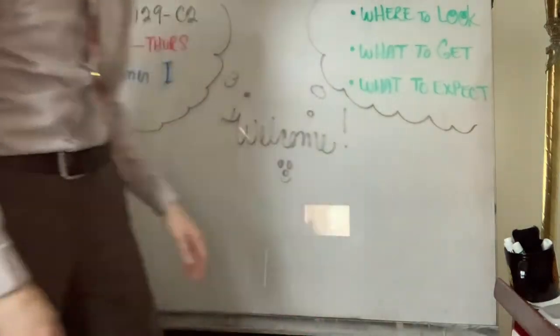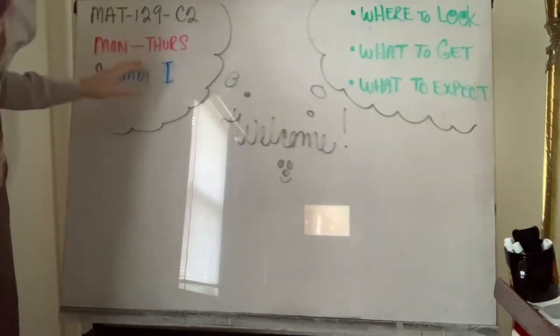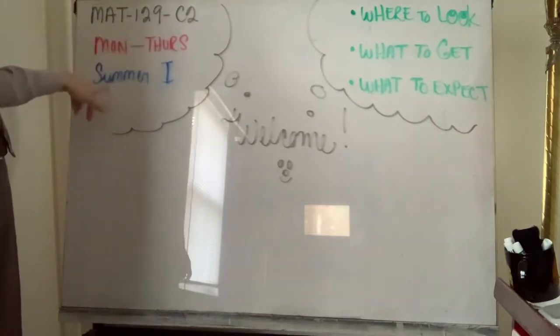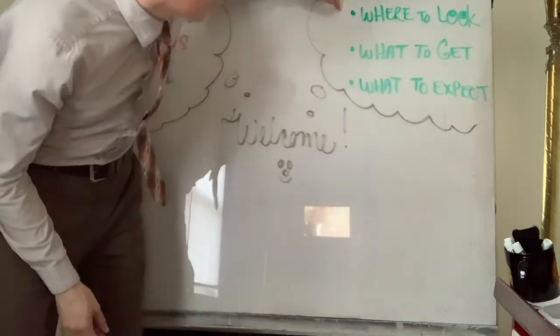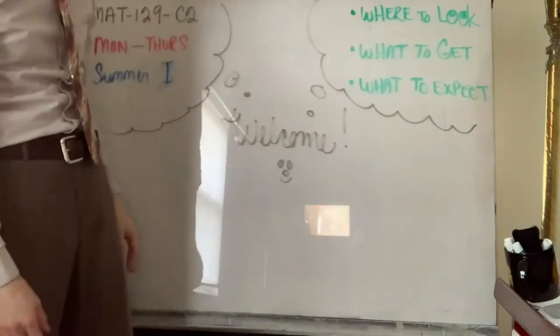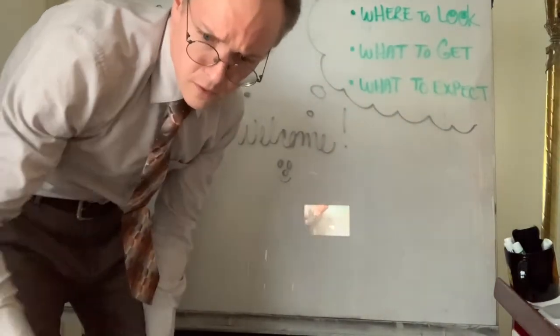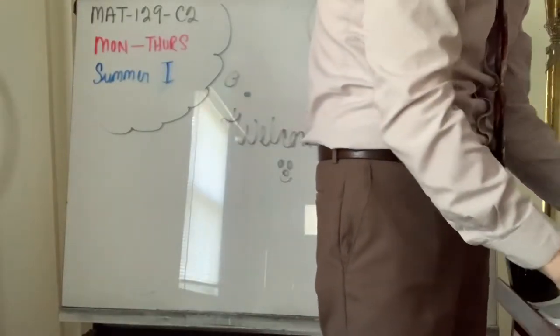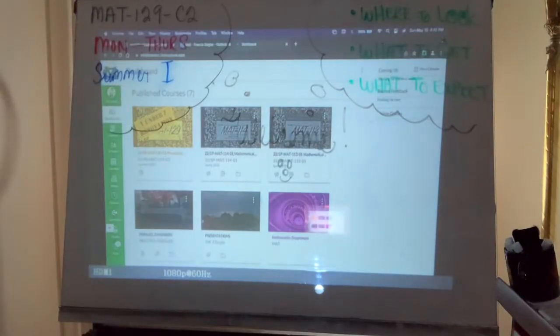Hello folks, this course is MAT 129 section C2. Normally we'll be meeting or having material on Mondays and Thursdays for summer one. Basically, what I'm going to do now is tell you where to look for information, what to get, specifically what to buy, and what to expect as far as the conditions of the class. Today is actually Sunday. I'm doing a pre-recording for Monday.